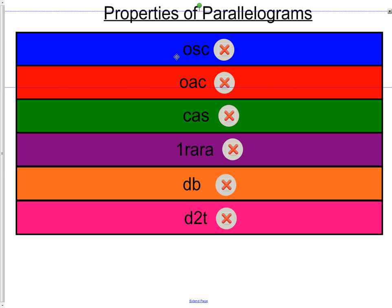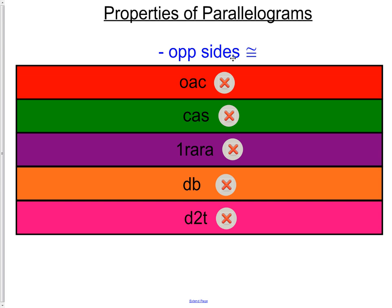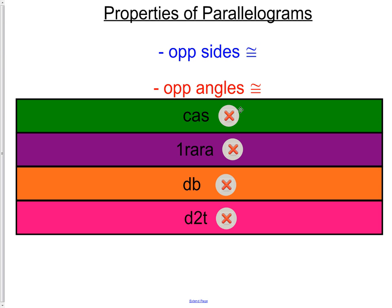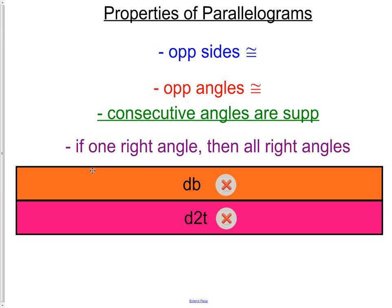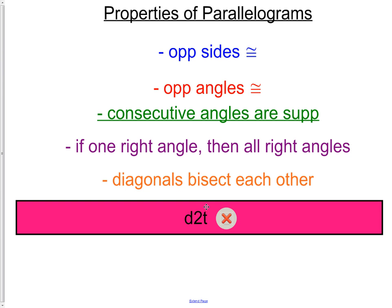Properties of a parallelogram. Here we go. First off, opposite sides are congruent. Next, opposite angles are congruent. Next, consecutive angles are congruent. If one right angle is present, then all angles are right angles. So in a parallelogram, if we have one right angle, we have four right angles. Now this one we didn't actually have in the picture, but we have diagonals bisect each other. So that means the two diagonals cut each other into equal pieces.